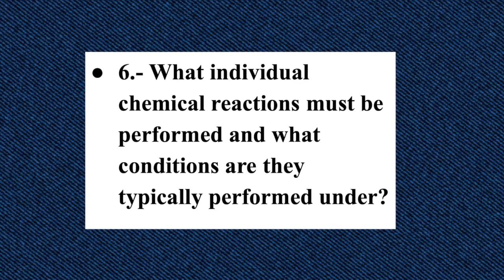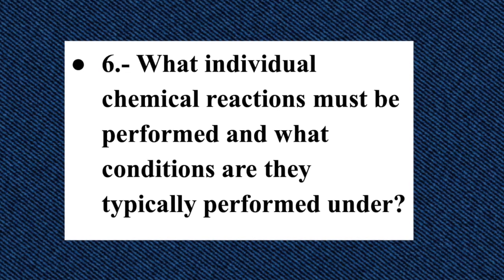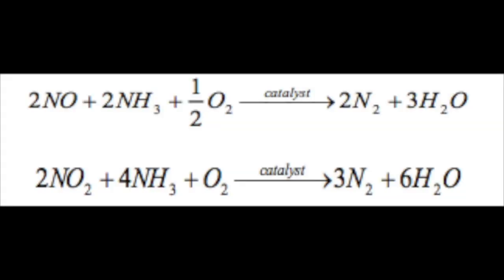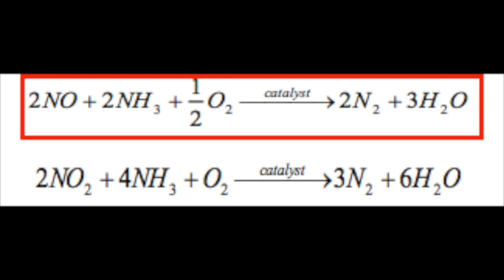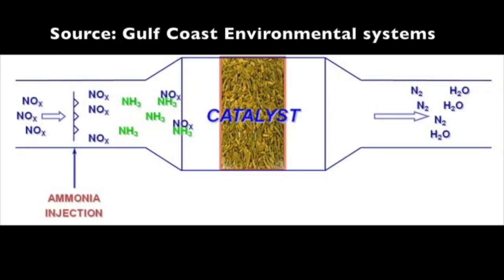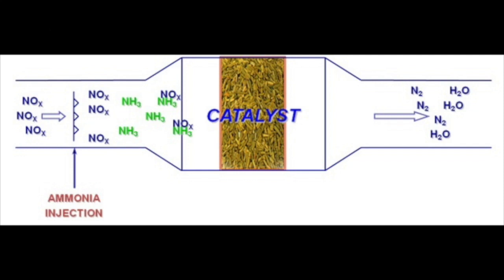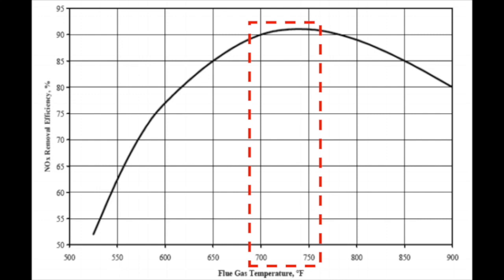Question six: what individual chemical reactions must be performed and under what conditions? As we can see, in both reactions the main chemical transformation is the reduction of nitrogen oxides into nitrogen gas and water vapor. The dominant reaction is the first one, as nitric oxide composes 90% of the nitrogen oxides in flue gas. The reaction is performed after a combustion process, hence conditions are high temperatures between 250 and 430 degrees Celsius, and water vapor is always present and may inhibit the reaction. On this graph, between 700 and 750 degrees Fahrenheit, the nitrogen oxide reduction reaches its maximum values.